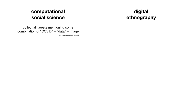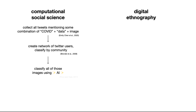But let's be concrete. When it came to the computational social science, we first collected all tweets mentioning some combination of the words COVID and data, and if they included an image. Then we created a network of Twitter users and classified the communities using the Louvain method. Concurrently, we classified all of the images associated with these tweets using a computer vision model to ask: what kinds of data visualizations do different groups use?